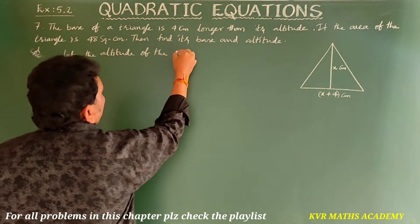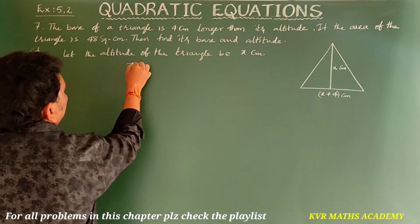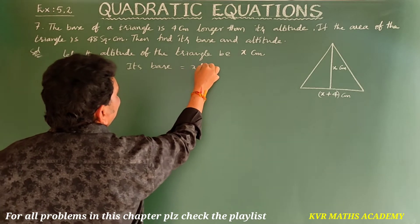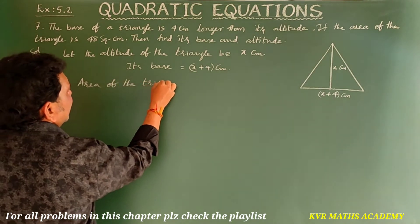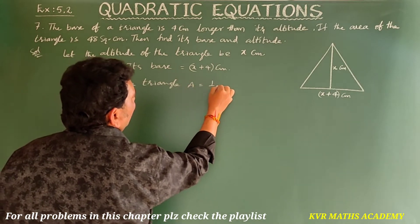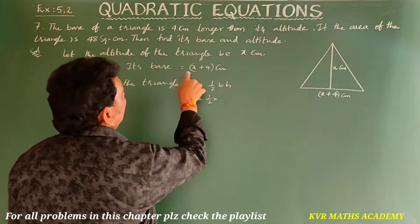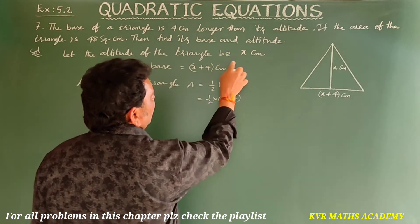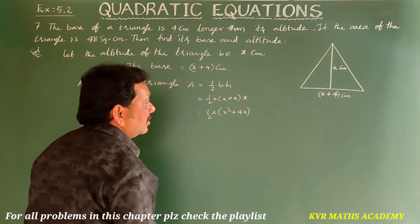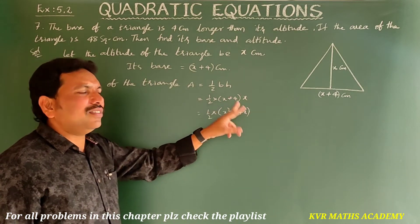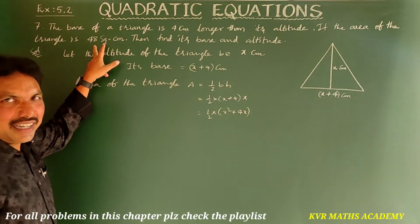Solution: Let the altitude of the triangle be x centimeters. Then its base is x plus 4 centimeters. The area of a triangle is A = half times base times height, so that is half into (x plus 4) into x, which equals half times (x squared plus 4x).